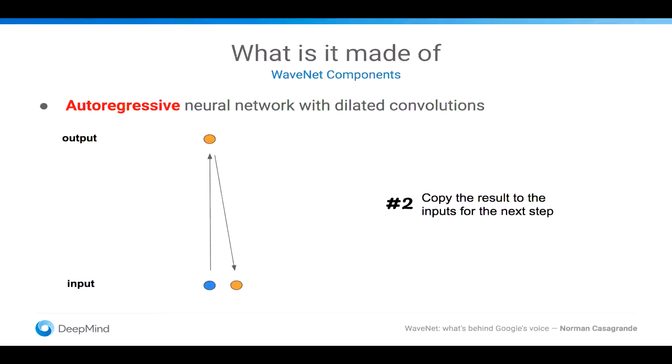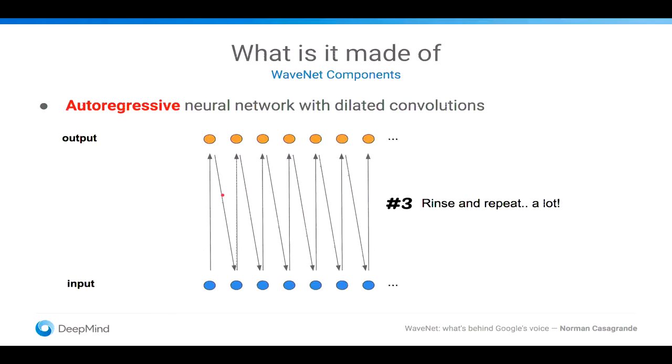Then you pick up that sample at that time step, and you use it as the next input. And then, again, you go through the network, which, by the way, is the same. Just to be clear, in this case, those two samples are different, but the network in the middle is the same. So, you readjust those things a little bit, and so forth. You repeat, you repeat, you repeat, and then you end up having a lot of those samples that are generated.